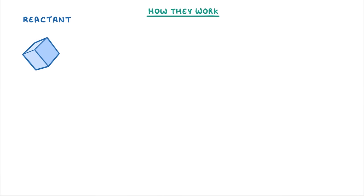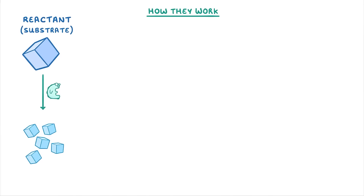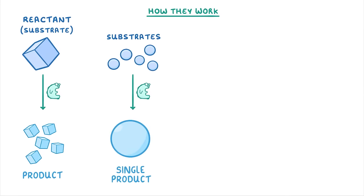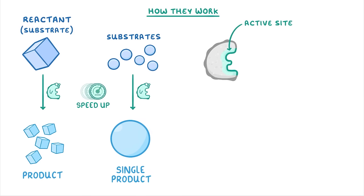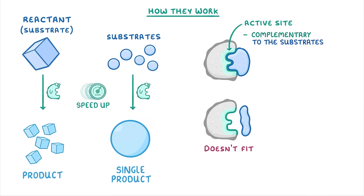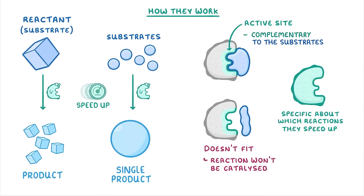Now that we know what enzymes are, we need to look at how they work. Chemical reactions often involve taking a reactant — which in biology we call a substrate — and breaking it apart into smaller pieces called products. The reverse is also very common, with reactions joining together multiple substrates into a single product. All enzymes do in these cases is speed up the process. To do this, they have a special region called an active site, which is a part of the enzyme with a unique shape that is complementary to the substrates of the reaction. If the substrate doesn't fit the active site of the enzyme, then the reaction won't be catalyzed, and this allows enzymes to be really specific about which reactions they speed up.